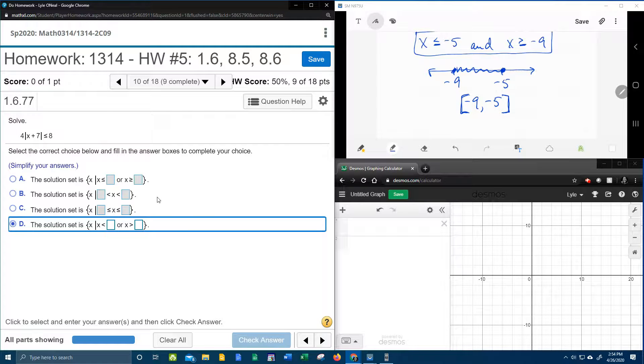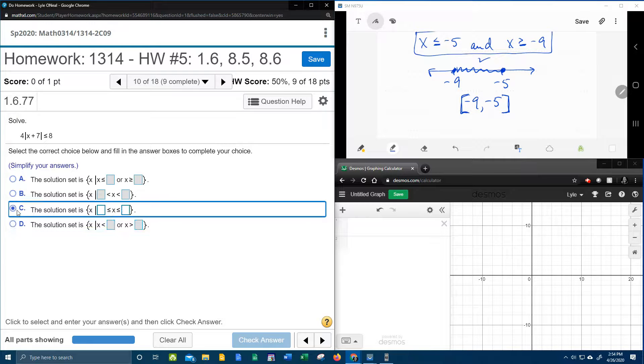Now notice over here in our My Lab Math, that is not the way that they want it, okay? But we do know that we have an and statement. So answer A and D, those can be excluded because they have or. Also notice that answer choice B doesn't have the equal to. So it's going to have to be C.